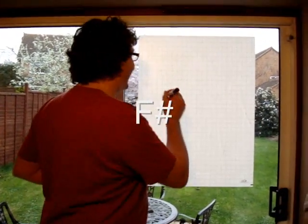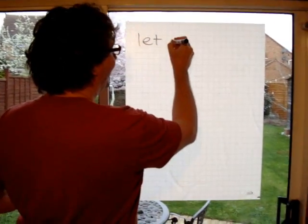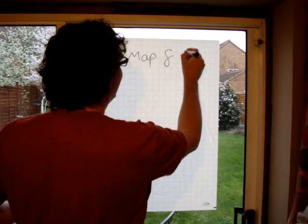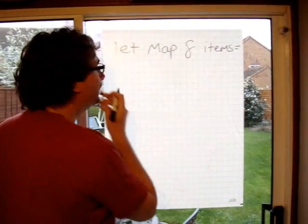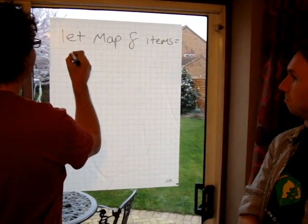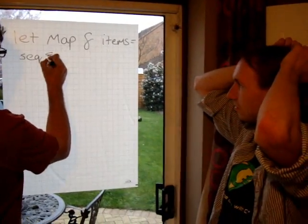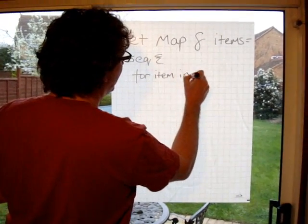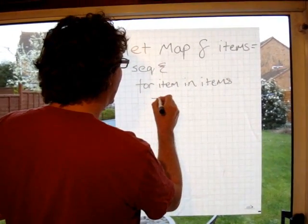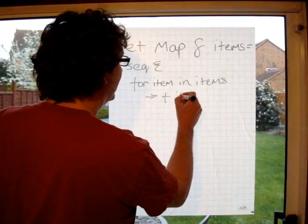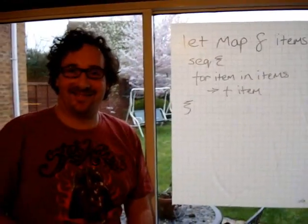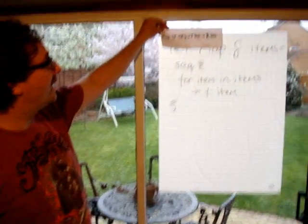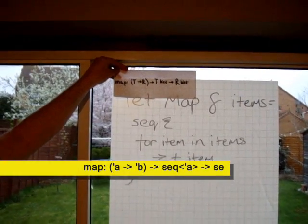Let's have a look at what it looks like in F#. Let's start by declaring the function map. I guess we need to take a function and some items. Now we need to go over those items and return a sequence, and we'll just pipe out the result. Done. Wait — where are your types? Is it all dynamic? Oh, you mean like these ones? Look, there's my tooltip — it's type safe.